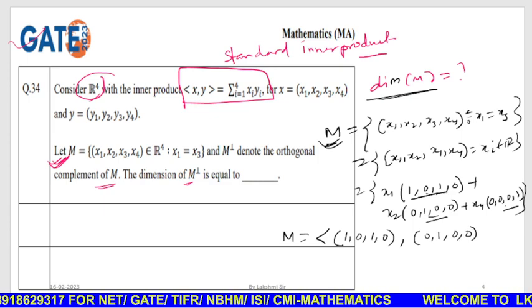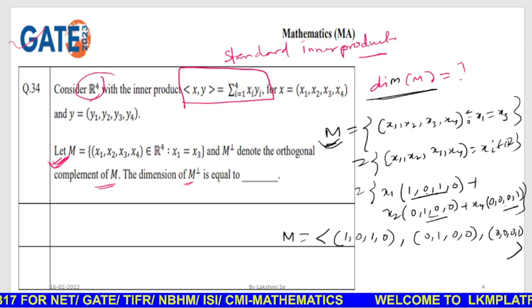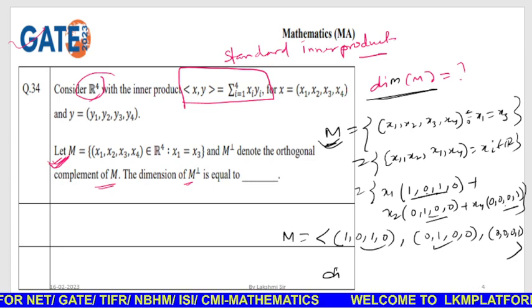(1,0,1,0), (0,1,0,0), (0,0,0,1). So obviously the dimension of M.